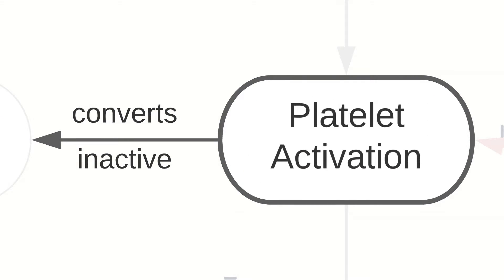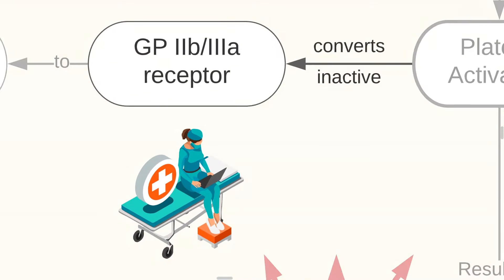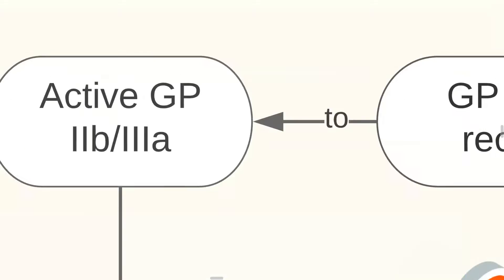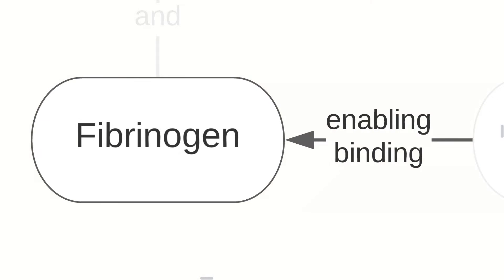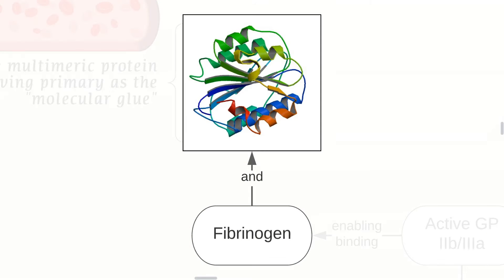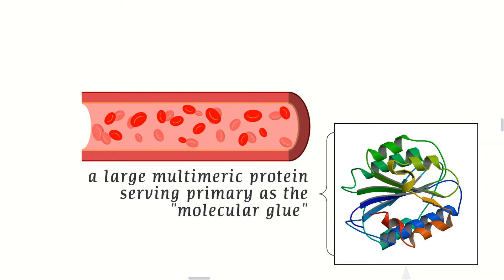Platelet activation converts our inactive GP2B and 3A receptors to active GP2B and 3A receptors. Now remember this. This enables binding of fibrinogen and the von Willebrand factor. This is a large multimeric protein serving primarily as the molecular glue that prevents clots from being torn apart by shear stress.